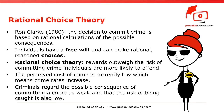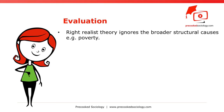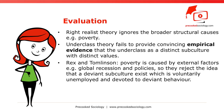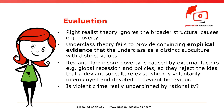Evaluation: Right Realist Theory ignores the broader structural causes like poverty. The underclass theory fails to provide convincing empirical evidence, based on primary research, that the underclass as a distinct subculture with distinct values and behaviors actually exists. Rex and Tomlinson point out that poverty is often caused by external factors, for example global recession and governmental policies, so they reject the idea that a deviant subculture exists which is voluntarily unemployed and devoted to deviant behavior. Right Realist Theory also exaggerates the rationality of criminals — for example, is violent crime really underpinned by rationality?